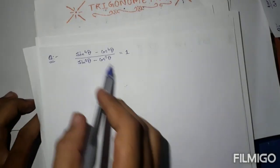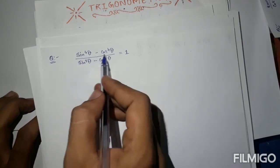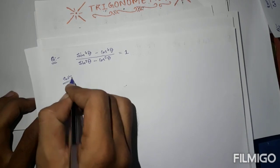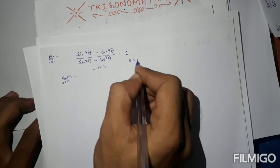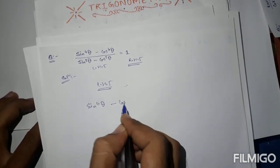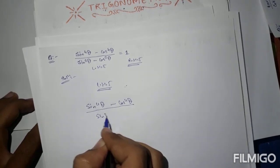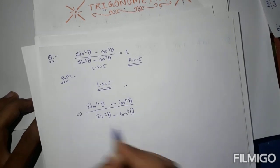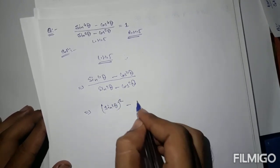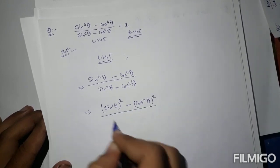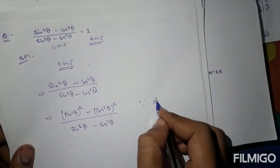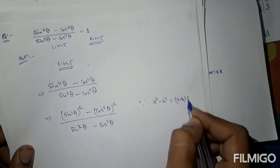The next question is: (sin⁴theta minus cos⁴theta) upon (sin²theta minus cos²theta) equals 1. We follow the same procedure. Take LHS. We can write the numerator as (sin²theta)² minus (cos²theta)², and the denominator as (sin²theta minus cos²theta). Using the identity a² minus b² equals (a minus b)(a plus b).